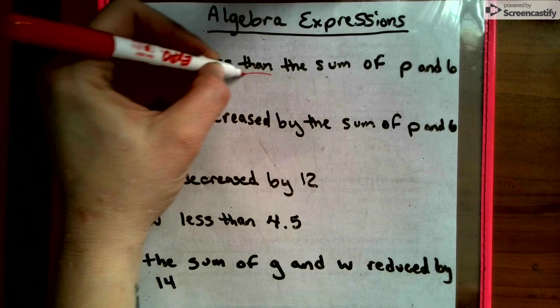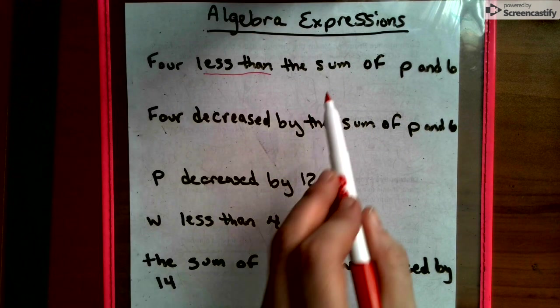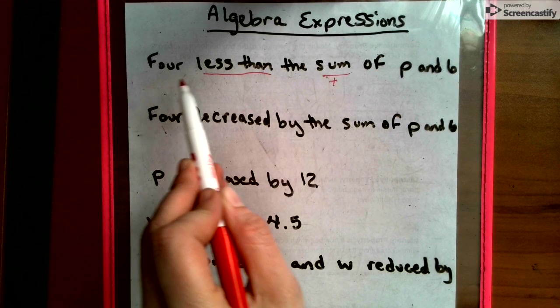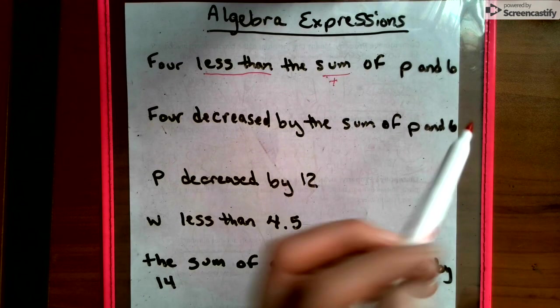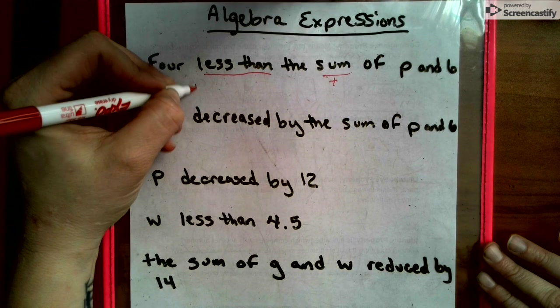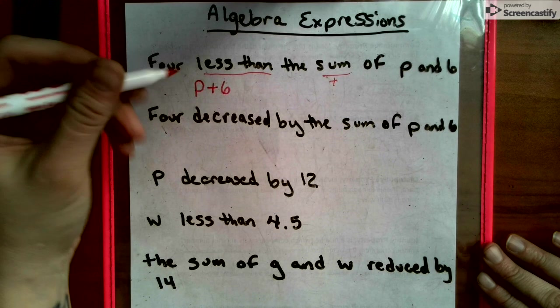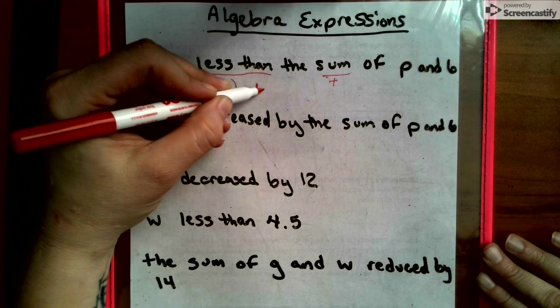Remember, less than means we have to put the 4 after this. The sum means we're going to be adding something. So 4 less than the sum of P and 6 - we have to have the answer of P plus 6 before we can take 4 from it.